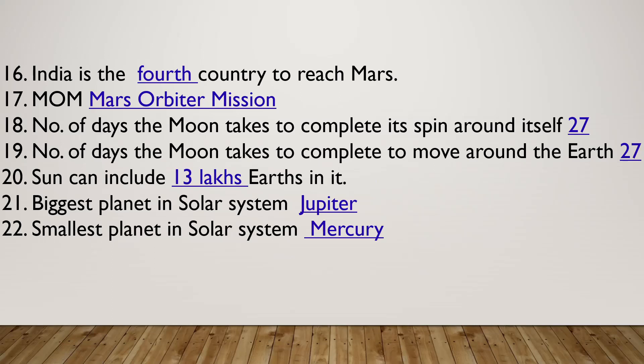The Moon takes 27 days to complete its spin around itself. The Moon also takes 27 days to move around the Earth. The Earth takes 365 days to revolve around the Sun.